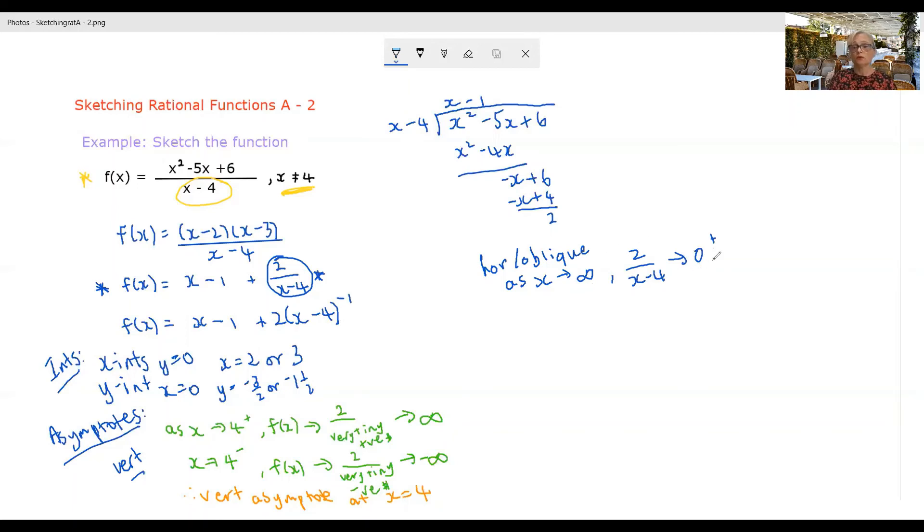As x is tending towards negative infinity, this rational expression here will be tending towards zero from below. So again, y will be tending towards this line here.